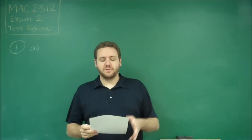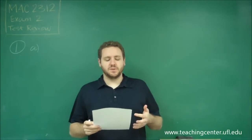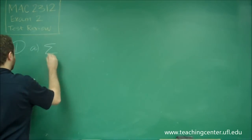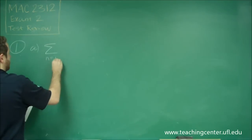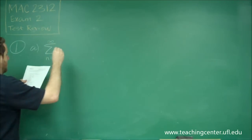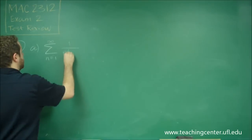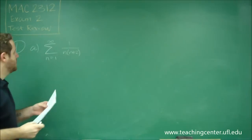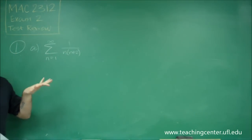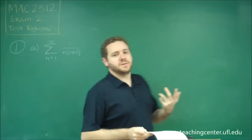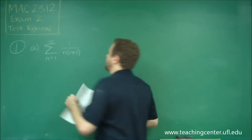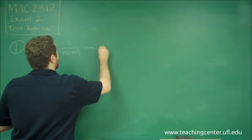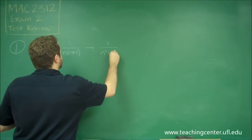For number one, we're finding if the following series converge or diverge. For letter a, we have the series from n equals 1 to infinity of 1 over n times n plus 2. In stating the convergence or divergence, this should be relatively simple here. The main reason is that this simplifies to 1 over n squared plus 2n.